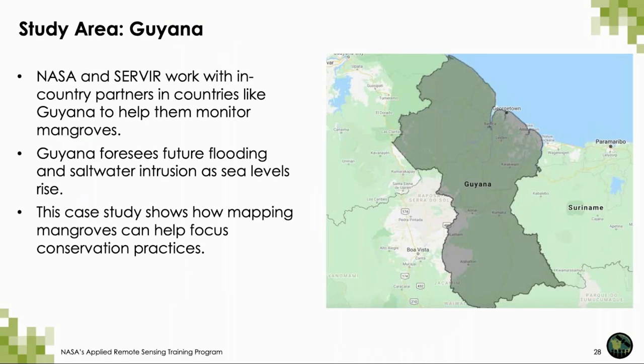For today's workshop, we will be using Guyana as our study area. NASA and partners work with in-country partners in countries like Guyana to help them monitor mangroves. Guyana foresees future flooding and saltwater intrusion as sea levels rise, making mangroves there potentially threatened by sea level rise. We want to understand where mangroves are currently found and how they have changed in the past decade or so. This study will show how mapping mangroves can help us focus conservation practices.